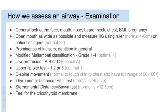Look for the existence of a beard. Look at the neck — is it short? Is there an obvious deformity such as marked kyphosis? Then look at the chest: does the patient have a barrel chest? Are they stout? Do they have large breasts, which can make physical laryngoscopy difficult? Assess their BMI and look to see if they are obviously pregnant.